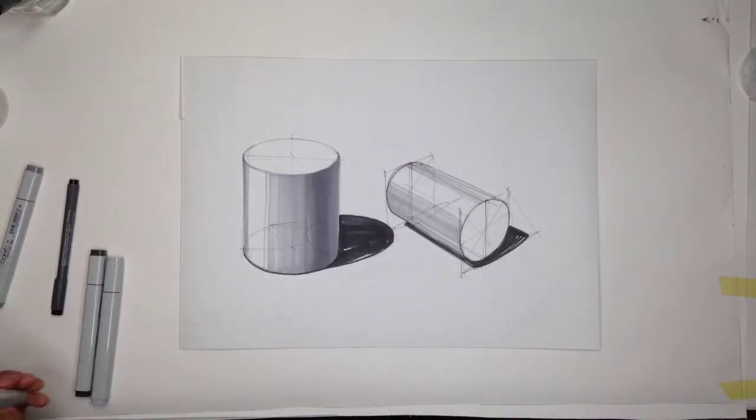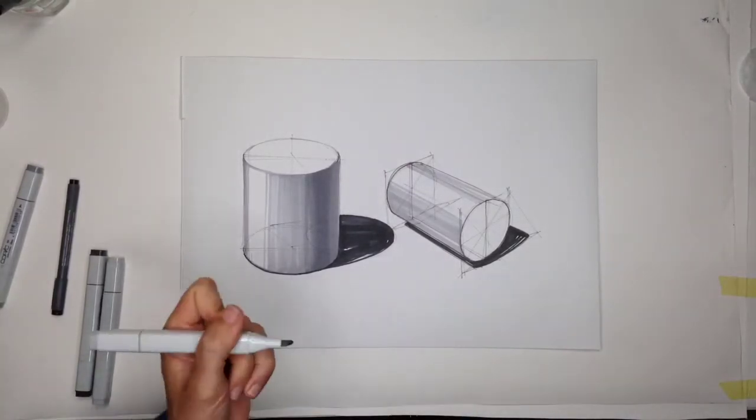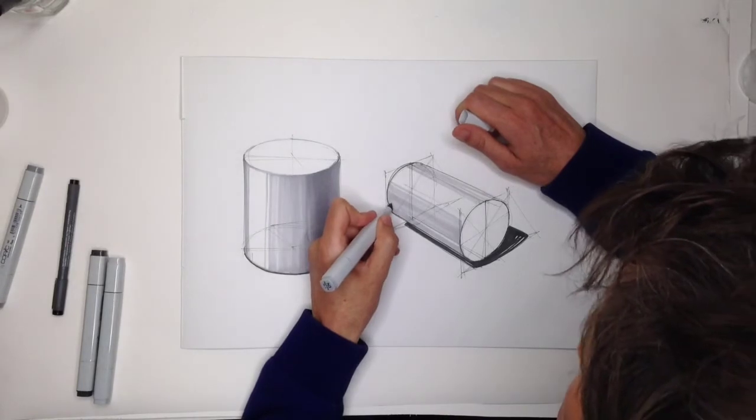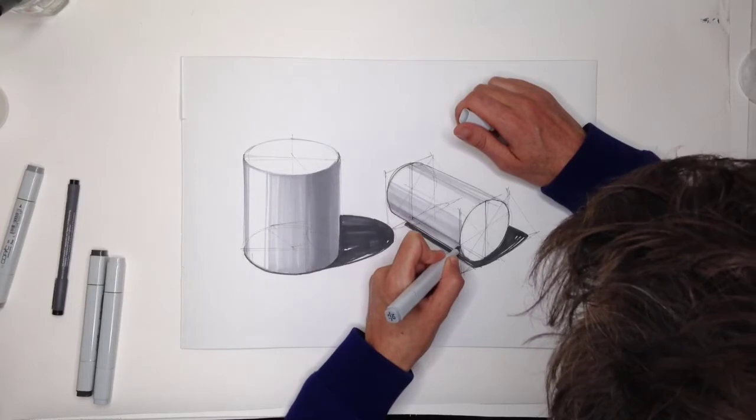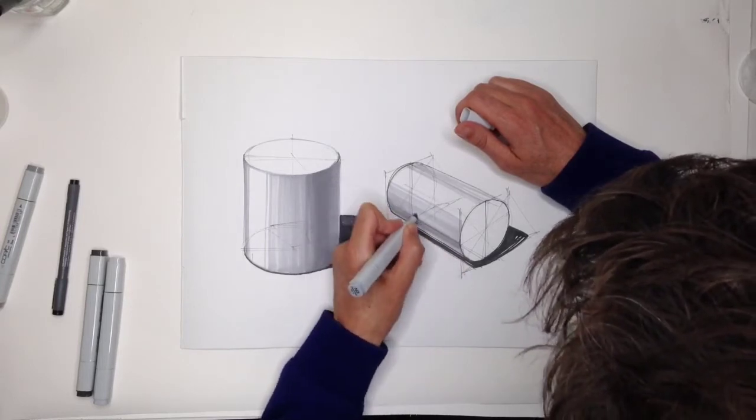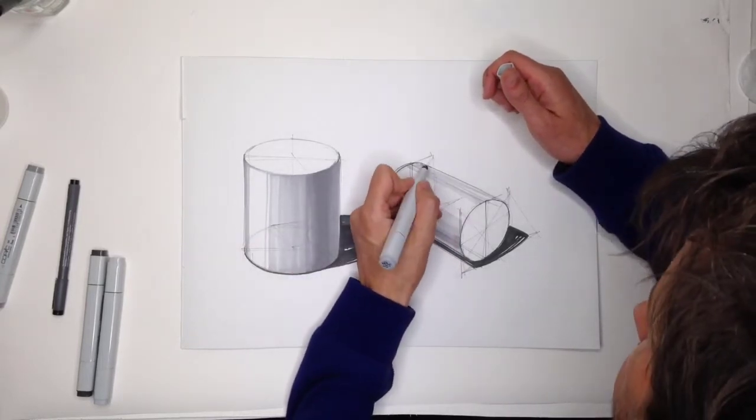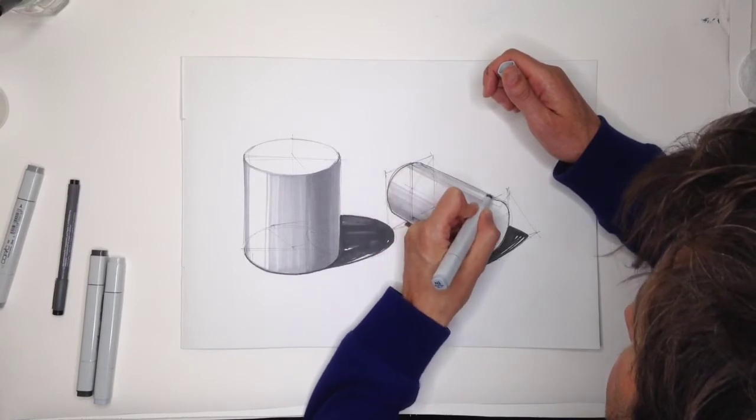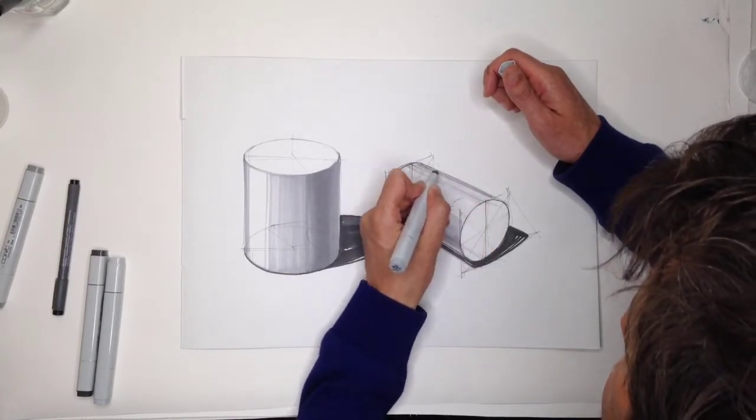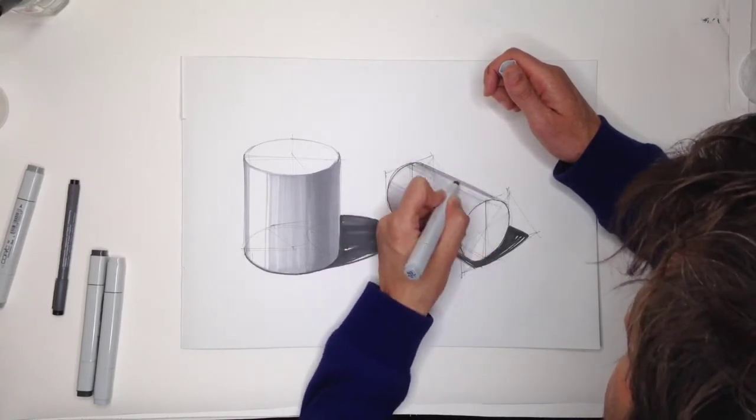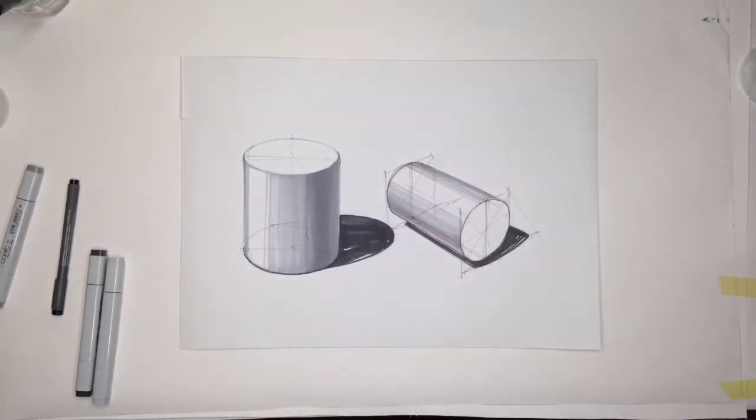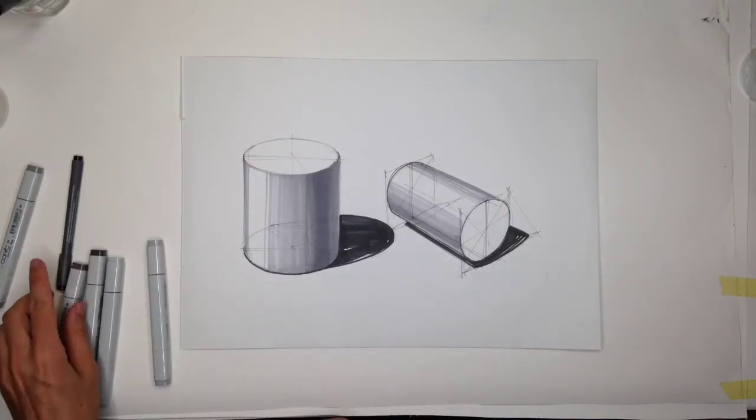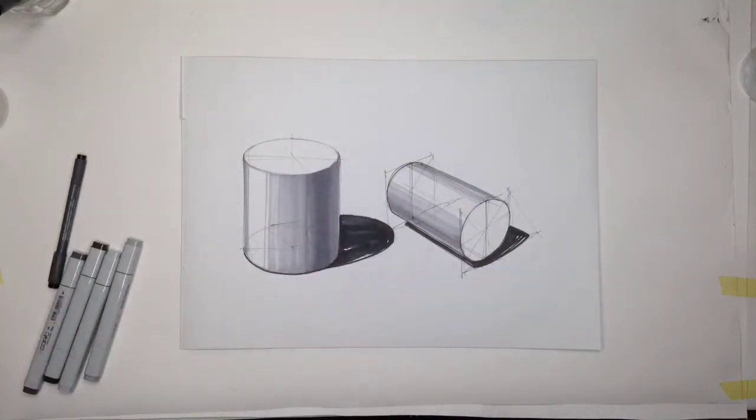Now I'm going to take a darker gray marker and I'm going to try to create darker tones here and also here on the back. So basically, fairly simple. Consider the direction where the light's coming from and darken any surface which is moving away from that.